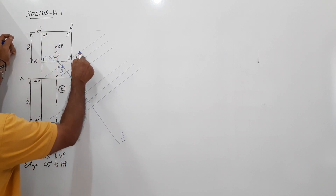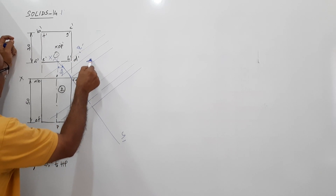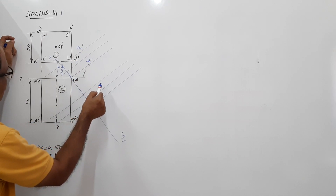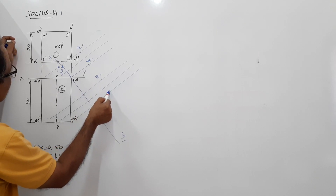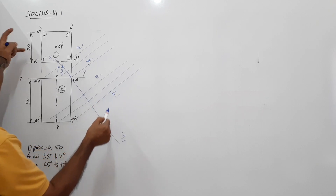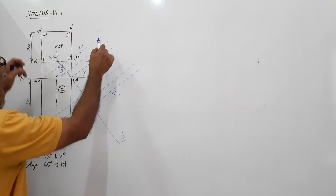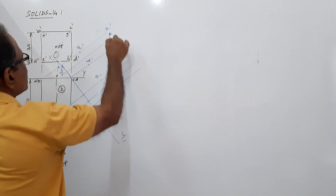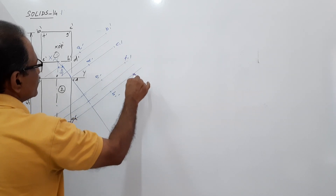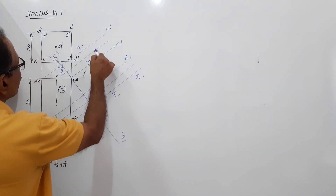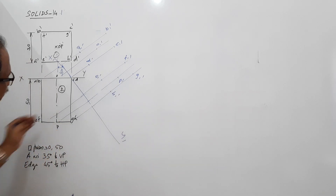Mark them on the projector through A to get A1 dash. Similarly mark D dash, E dash, and H dash. Then B dash, F dash, C dash, D dash — mark them this much away from XY to get B1 dash, C1 dash, F1 dash, G1 dash. Also mark O dash and P dash to get O1 dash and P1 dash.